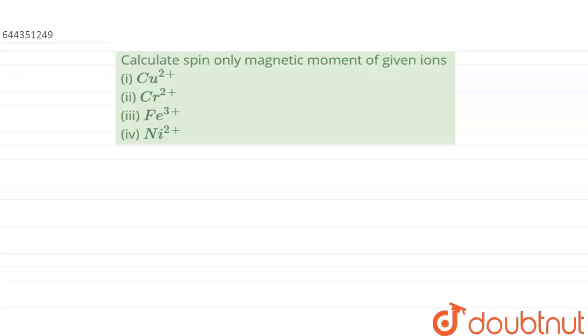Hello everyone, the question is calculate the spin only magnetic moment of given ions. Number 1 is Cu²⁺, number 2 is Cr²⁺, number 3 is Fe³⁺, and number 4 is Ni²⁺. Let us calculate the spin only magnetic momentum.